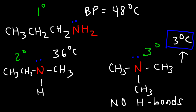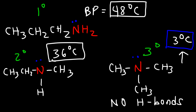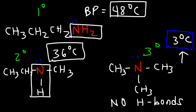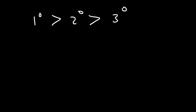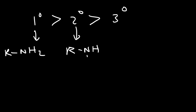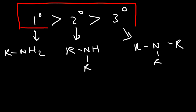The primary amine has a slightly higher boiling point than the secondary amine — they both contain hydrogen bonds, but the NH2 group in the primary amine has two hydrogens attached to nitrogen compared to only one NH in the secondary amine. For the most part, primary amines have higher boiling points than secondary amines, and secondary amines have higher boiling points than tertiary amines. The primary amine has two N-H bonds, the secondary amine has one N-H bond, and the tertiary amine has none. That's all for this video — thanks for watching.